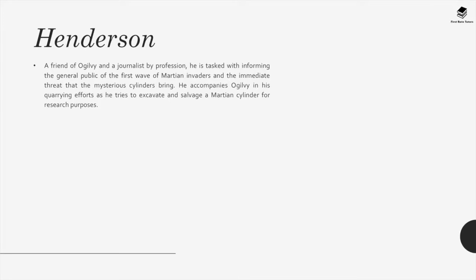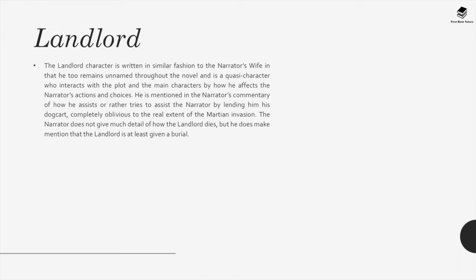Henderson: A friend of Ogilvy and a journalist by profession. He is tasked with informing the general public of the first wave of Martian invaders and the immediate threat the mysterious cylinders bring. He accompanies Ogilvy in his quarrying efforts as he tries to excavate and salvage a Martian cylinder for research purposes. The Landlord: Written in similar fashion to the narrator's wife, he too remains unnamed throughout the novel and is a quasi-character who interacts with the plot by affecting the narrator's actions and choices. He is mentioned in the narrator's commentary for lending him his dogcart, completely oblivious to the real extent of the Martian invasion. The narrator does not give much detail of how the landlord dies, but does mention that he is at least given a burial.